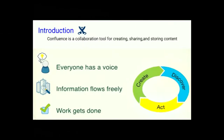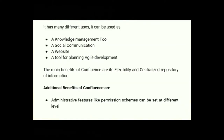This process is called a work collaboration cycle where, at the end, everyone has a voice, information flows freely, and work gets done. It has many different uses — it can be used as a knowledge management tool, a social communication platform, a website, or a tool for planning agile development. The main benefits of Confluence are its flexibility and centralized repository of information. Additional benefits include administrative features like permission schemes that can be set up at different levels.